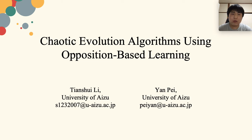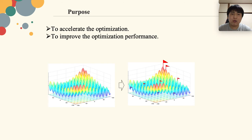My research topic is Chaotic Evolution Algorithms using Opposition-Based Learning. It's an evolutionary optimization algorithm which applies chaotic ergodicity and the opposition-based learning mechanism. Our proposed method aims to accelerate the optimization and improve optimization performance, overcoming drawbacks like weak search capability and premature convergence, so the new methods will approach the global optimal more easily and efficiently.